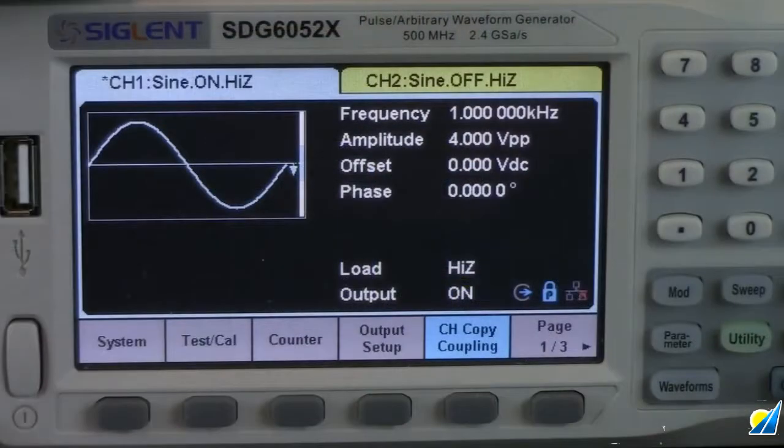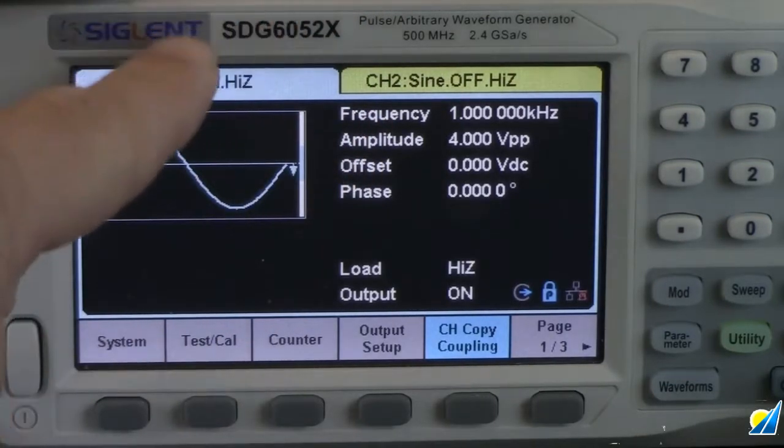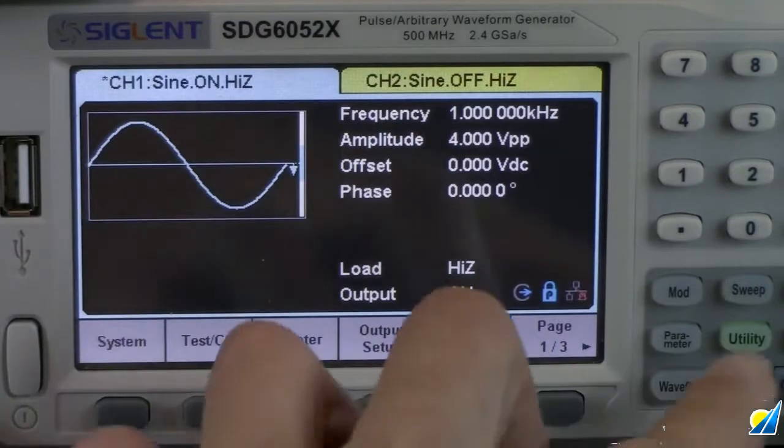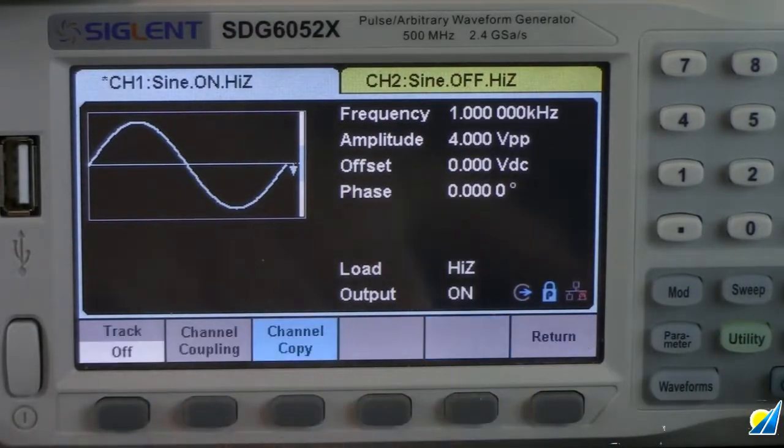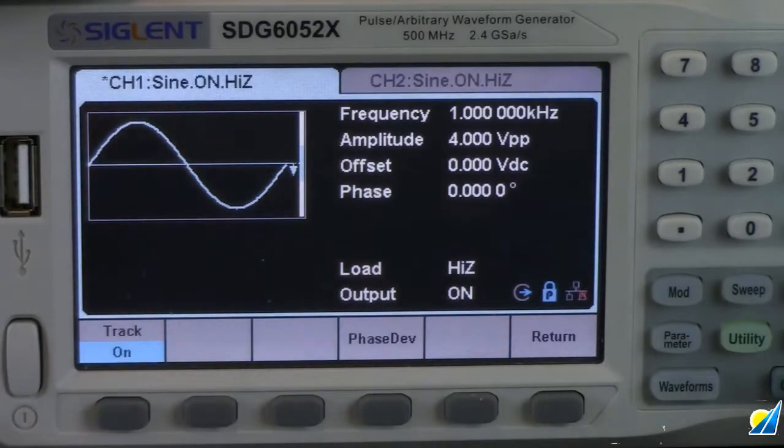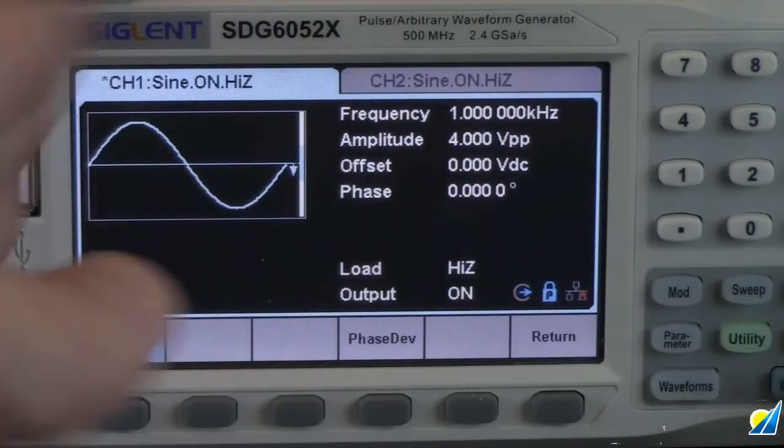Before we get everything going, we need to configure the SDG and we want channel one and channel two to track identically. That means we want the function, the frequency, and the amplitude as well as the output on and off state to happen simultaneously. In order to do that, we can turn on the tracking mode for the SDG X. So we're going to press the utility key, press channel copy coupling, and then we're going to turn on tracking. What that's going to do is now any command or configuration that we set up for channel one is going to be mimicked onto channel two.